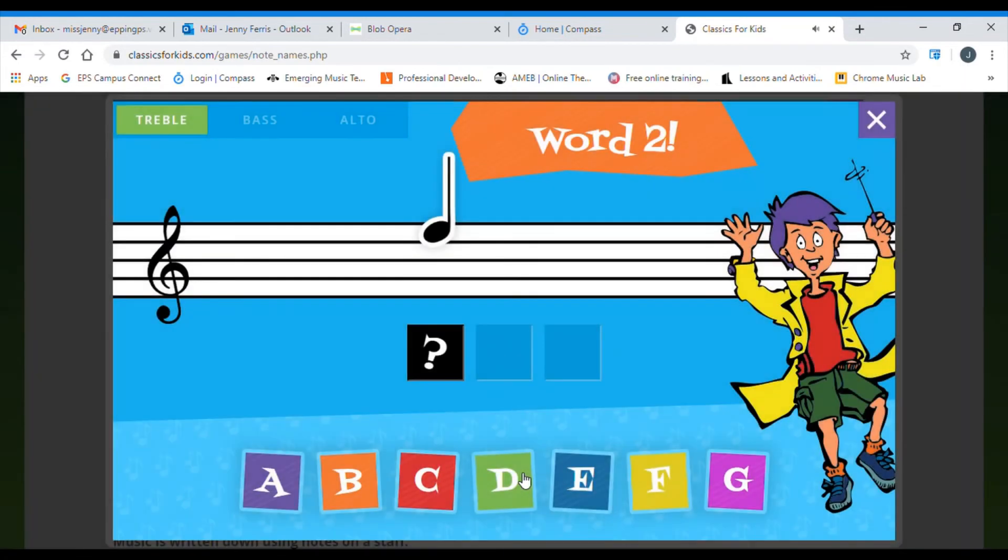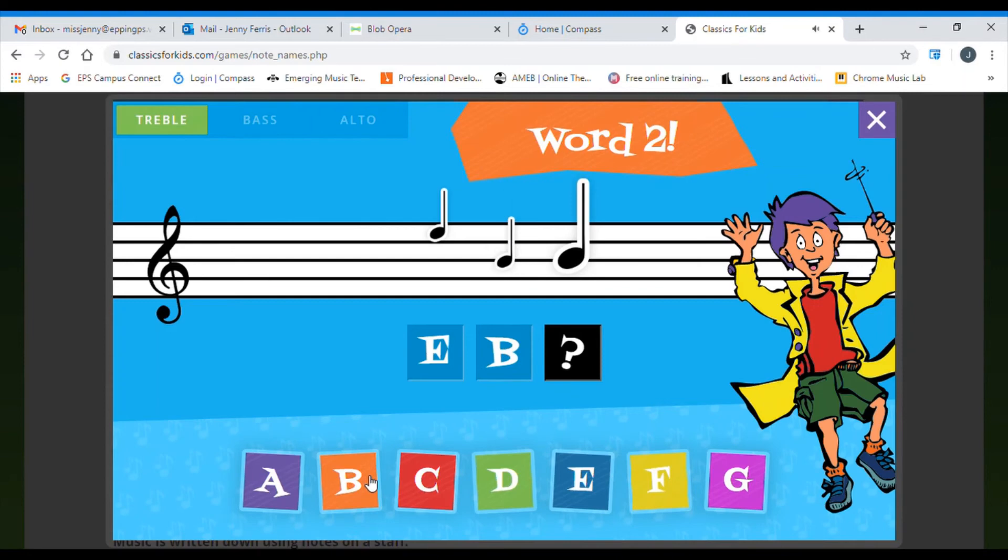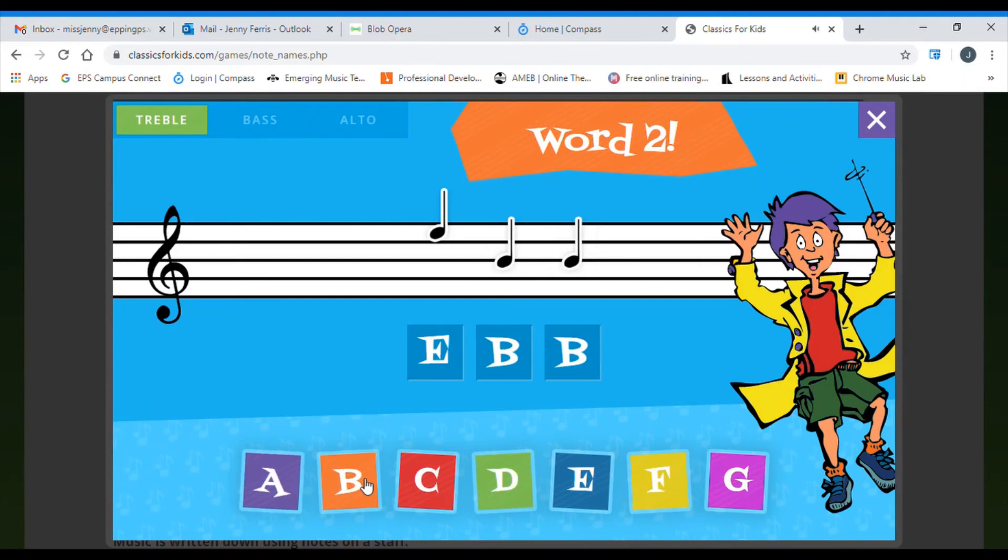Click on the next word to move on to the next problem. We have a space, F-A-C-E. We have a line, Every Good Boy. And we have another line, Every Good Boy. It's spelled out the word ebb.